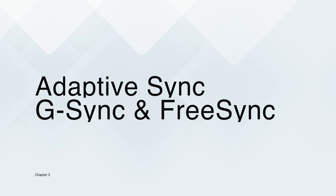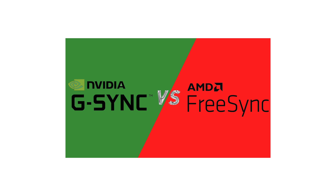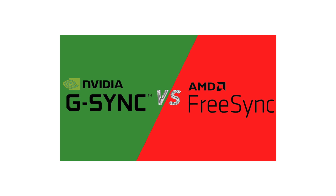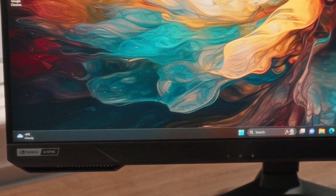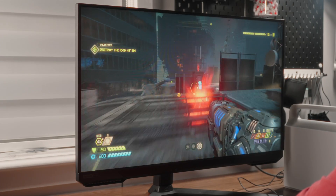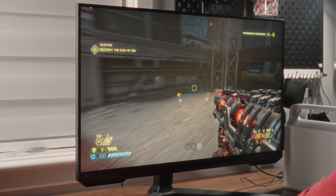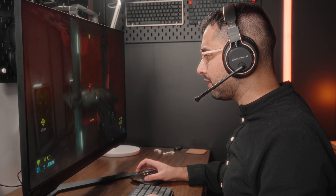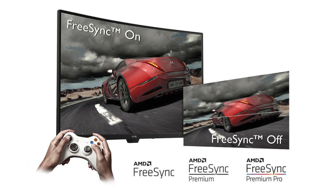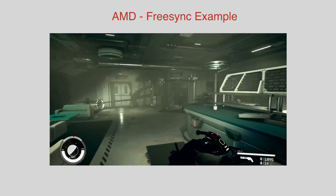Now we come to the two big players in the modern adaptive sync world: Nvidia's G-Sync and AMD's FreeSync. In the past the two had their differences, but in 2024 they are neck and neck in terms of quality, performance, and output — you can't really go wrong with either. Historically G-Sync exclusively worked with Nvidia cards like the RTX and GTX series, but modern G-Sync monitors are largely compatible with most AMD cards as well. FreeSync has always offered full compatibility across both AMD and Nvidia graphics cards from day one, and the differences between the two have become very slim.